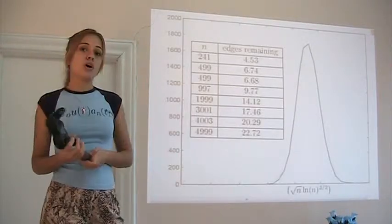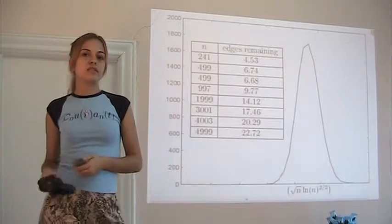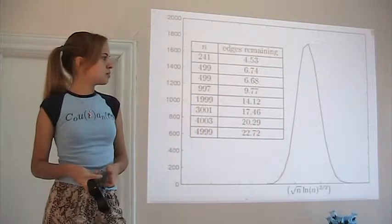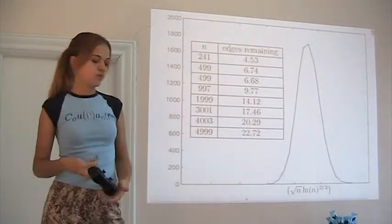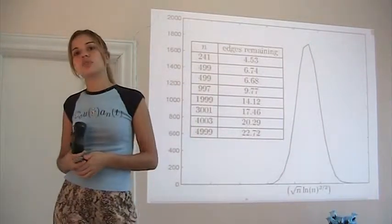What there is a proof of is that you can find packings that leave somewhere around that number of vertices unpacked. So the square root of n log n to the 3 halves.